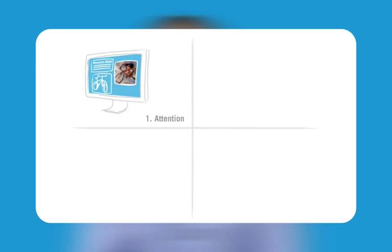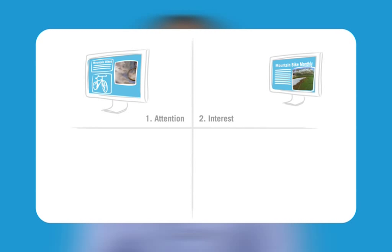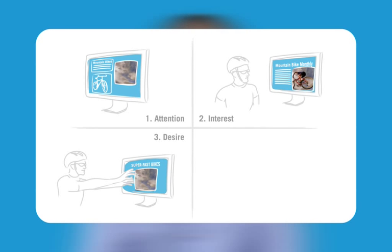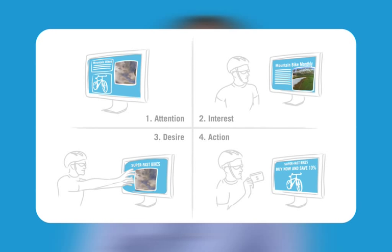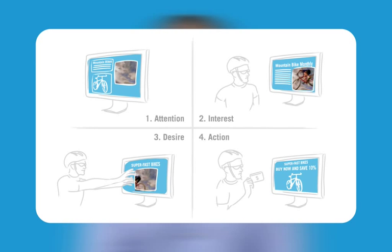Second, your ads will appear on sites highly relevant to your products and services. As a result, your advertisements are already aligned with the interests of people visiting those sites. By highlighting your unique products, pricing or other competitive advantages, you can convert casual visitors into buyers. Your ad's clear call to action, such as 'order now and save 10%', can encourage the most appropriate buyers to respond and close the buying cycle with a sale.